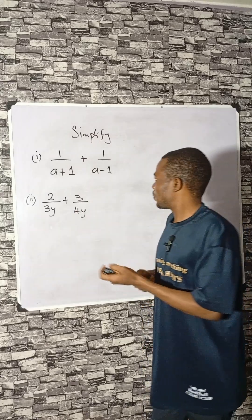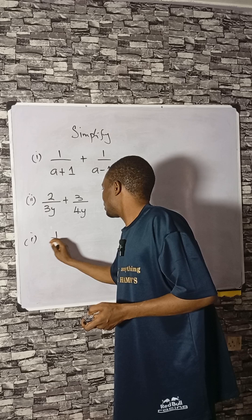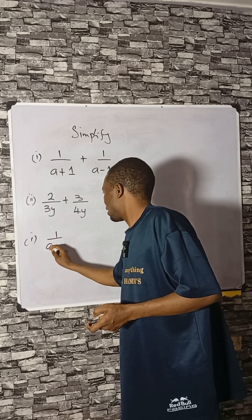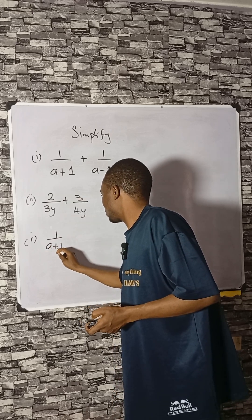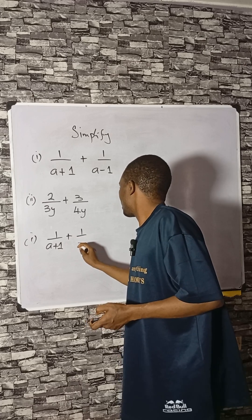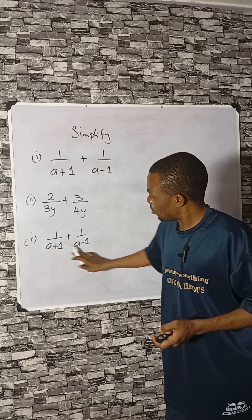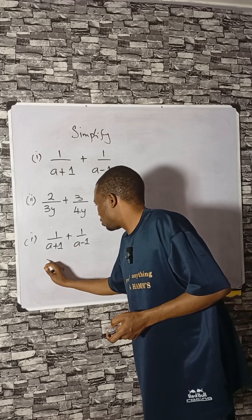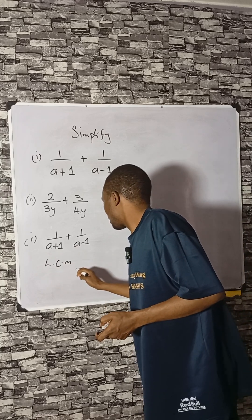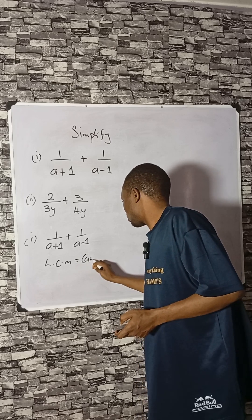Let's simplify the following: 1 divided by (a+1) plus 1 divided by (a-1). The LCM here, what you need to do is find the LCM, and the LCM here is (a+1) times (a-1).